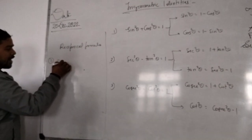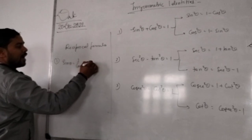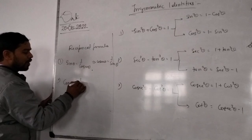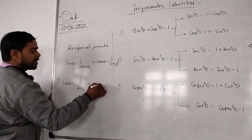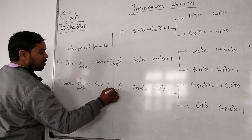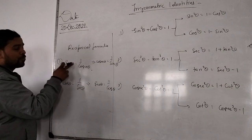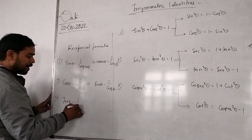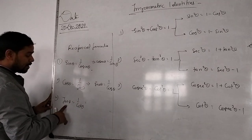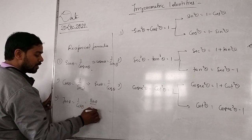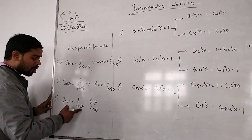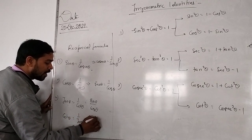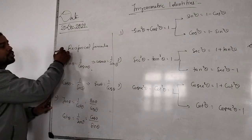The reciprocal formula means: first, sin theta equal to 1 upon cosec theta, and cosec theta equal to 1 upon sin theta. Second, cos theta equal to 1 upon sec theta, and sec theta equal to 1 upon cos theta. It means sin is the reciprocal of cosec, and cosec is the reciprocal of sin. Third, tan theta equal to 1 upon cot theta, and cot theta equal to 1 upon tan theta, which can also be written as cos theta upon sin theta.